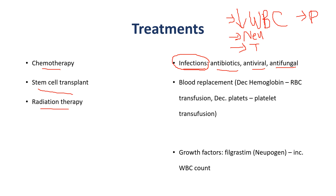For respiratory infections, perform a thorough respiratory assessment. Patients with leukemia may also receive blood replacement transfusions due to decreased hemoglobin, as well as platelet transfusions if they have reduced platelet levels.